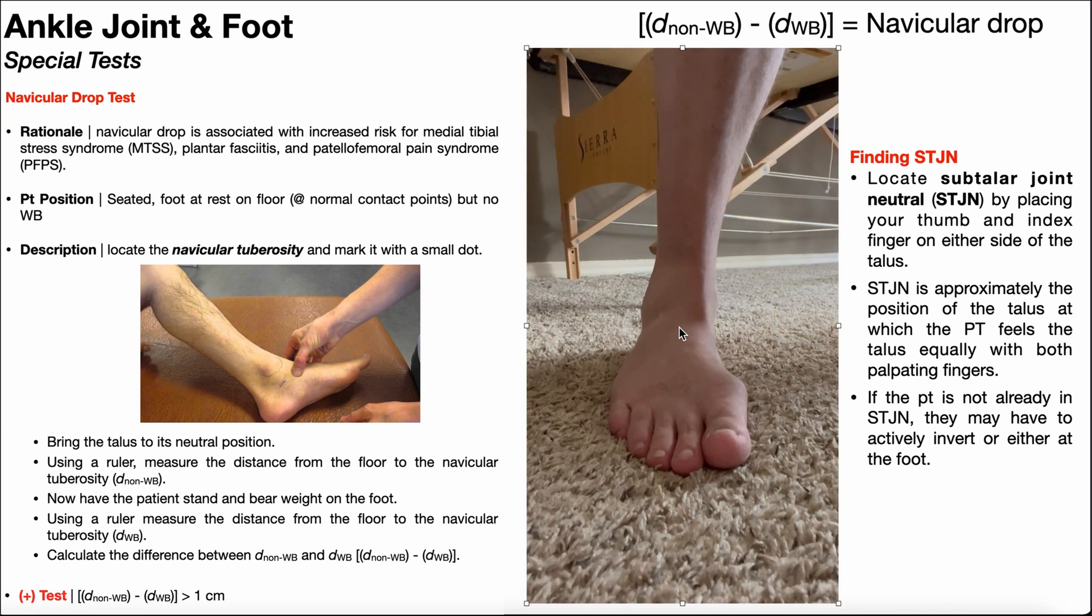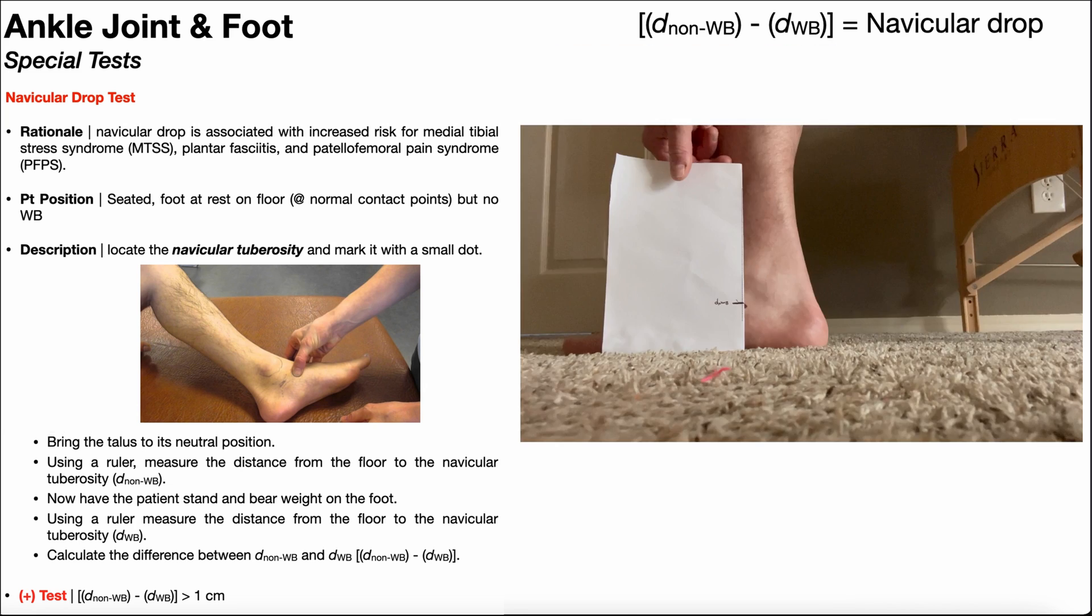Then while still in that non-weight-bearing state, and with the foot in subtalar joint neutral, you're going to measure the distance from the floor to the navicular tuberosity. And there's two ways to do this.